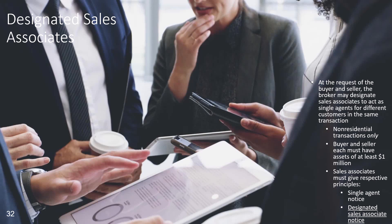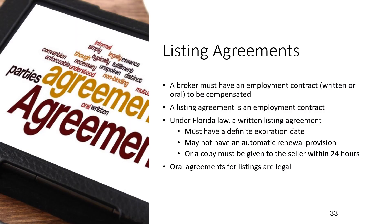Designated sales associates: at the request of the buyer and the seller, the broker may designate sales associates to act as single agents for different customers in the same transaction. This is for non-residential transactions only. The buyer and seller must have assets of at least $1 million, and sales associates must give respective principals the single agent notice and designated sales associates notice. A broker must have an employment contract, written or oral, to be compensated — known as a listing agreement. Under Florida law, a written listing agreement must have a definite expiration date, cannot have an automatic renewal provision, and a copy must be given to the seller within 24 hours. Note that oral agreements for listings are legal. This concludes Day 3.